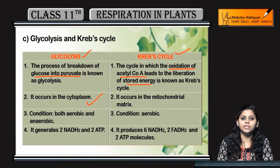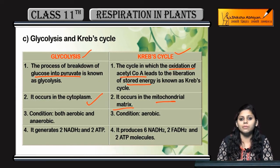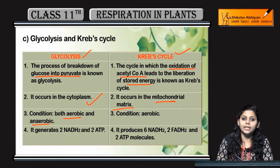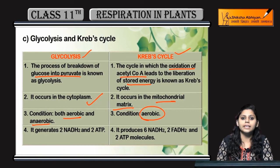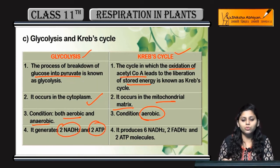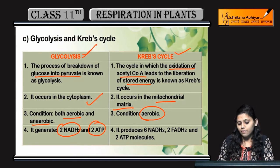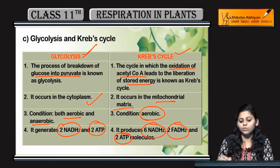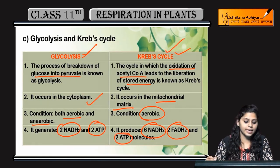The site of glycolysis is the cytoplasm, while the Kreb's cycle occurs in the mitochondrial matrix. Glycolysis can occur under both aerobic and anaerobic conditions, whereas the Kreb's cycle occurs only under aerobic conditions. Glycolysis generates 2 NADH₂ and 2 ATP, whereas the Kreb's cycle generates 6 NADH₂, 2 FADH₂, and 2 ATP molecules.